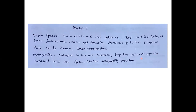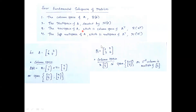The four fundamental subspaces of matrices are: column space, null space, row space, and left null space. Row space is simply the column space of A-transpose, and left null space is the null space of A-transpose. For example, we take matrix A = [[1,3],[2,7]] and matrix B = [[1,3],[2,6]].